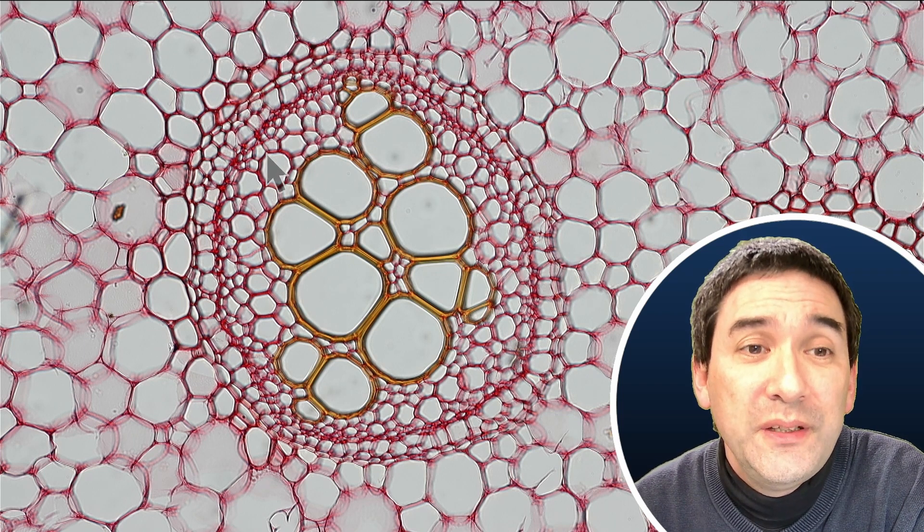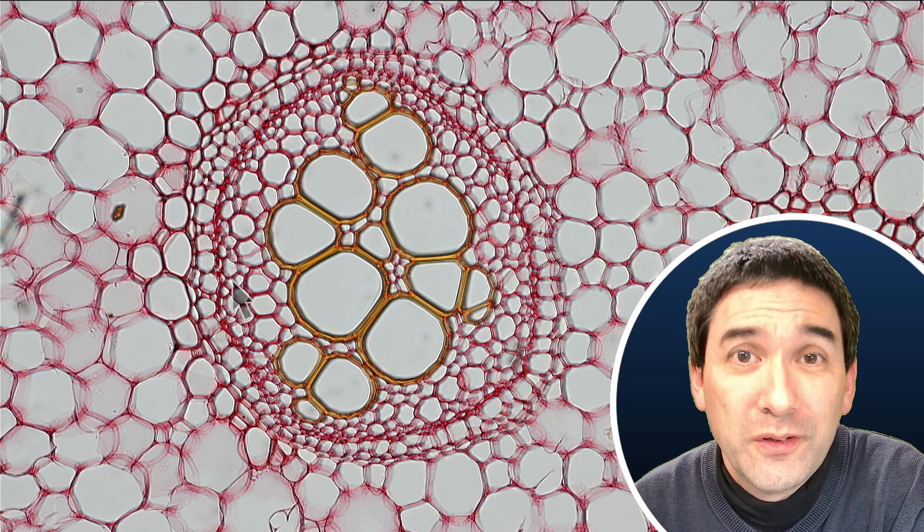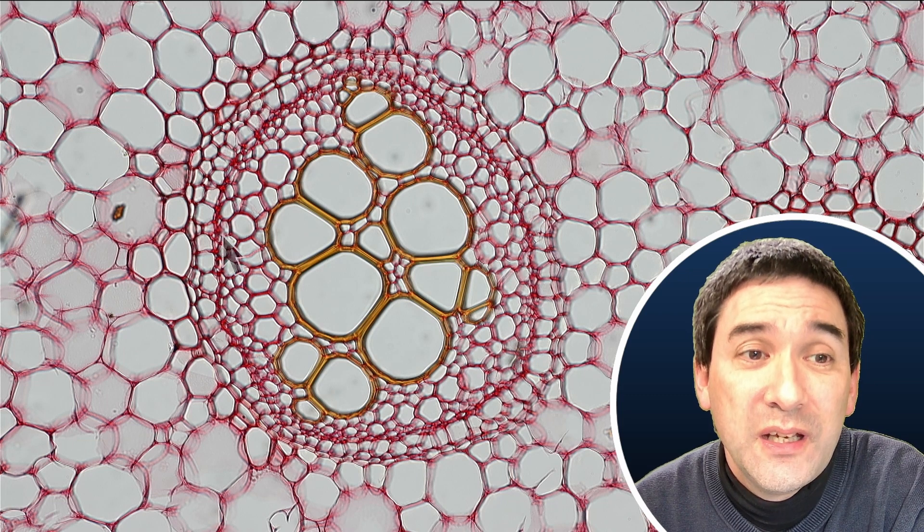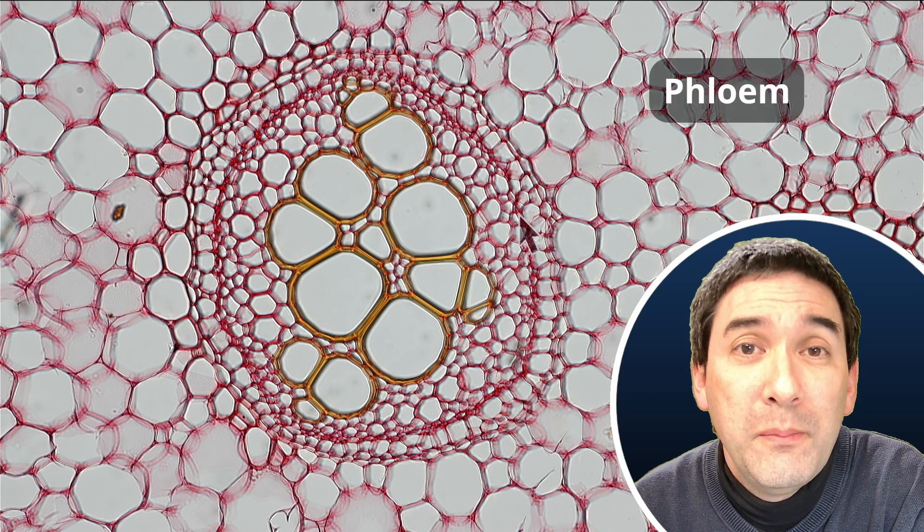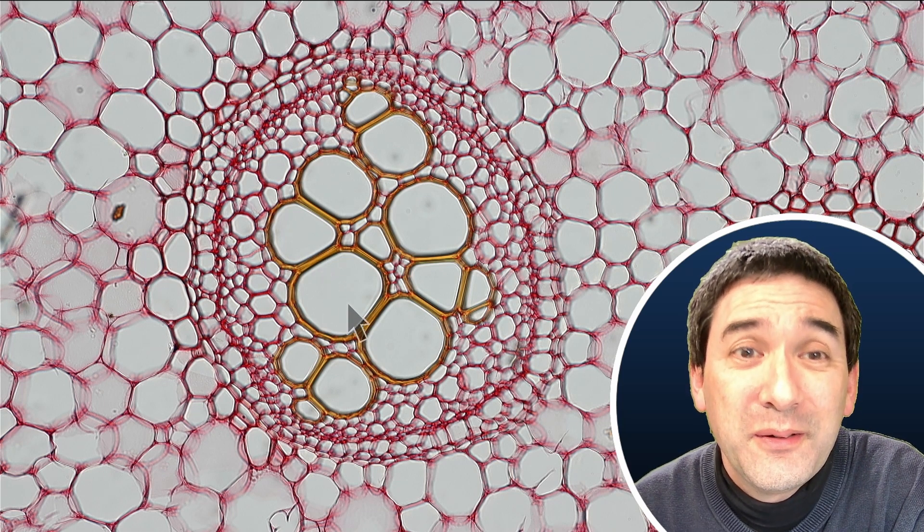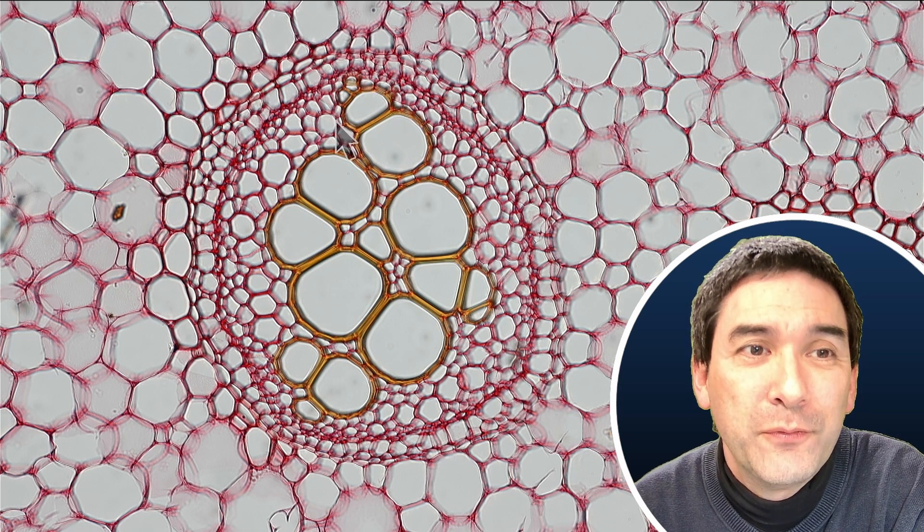And surrounding the xylem here, these are the cells that transport the products of photosynthesis, sugar, basically down to the roots. So you see that this phloem, as it's called, is surrounding the xylem, which is also a very interesting and typical structure of this type of fern here.